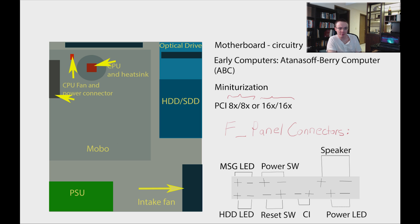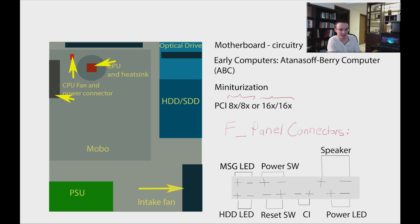When building your computer, there comes a point at which we have everything connected except the front panel connectors. These wires link to your power and reset buttons on your case, as well as any LED or light-emitting diode indicators you may have for errors, hard drive activity, and so on. Usually we have a reset switch, a hard disk drive LED speaker, power LED, and power switch.